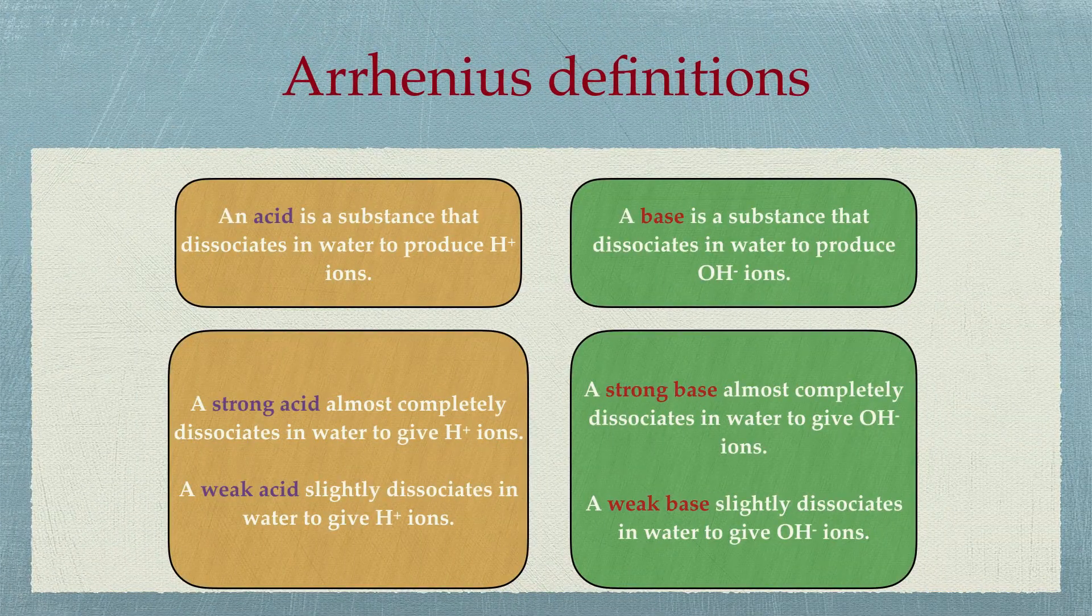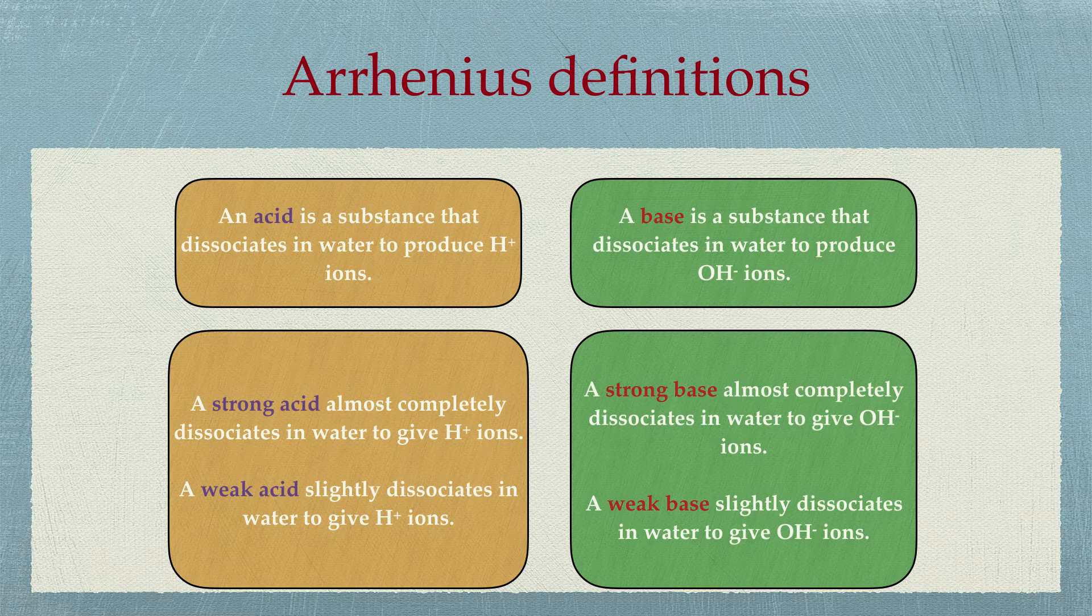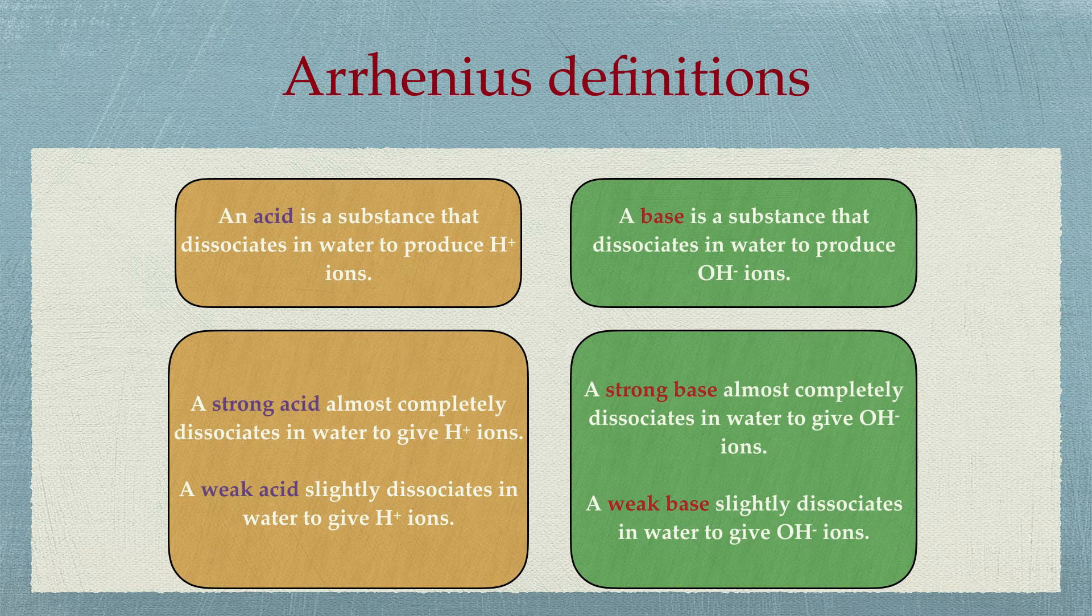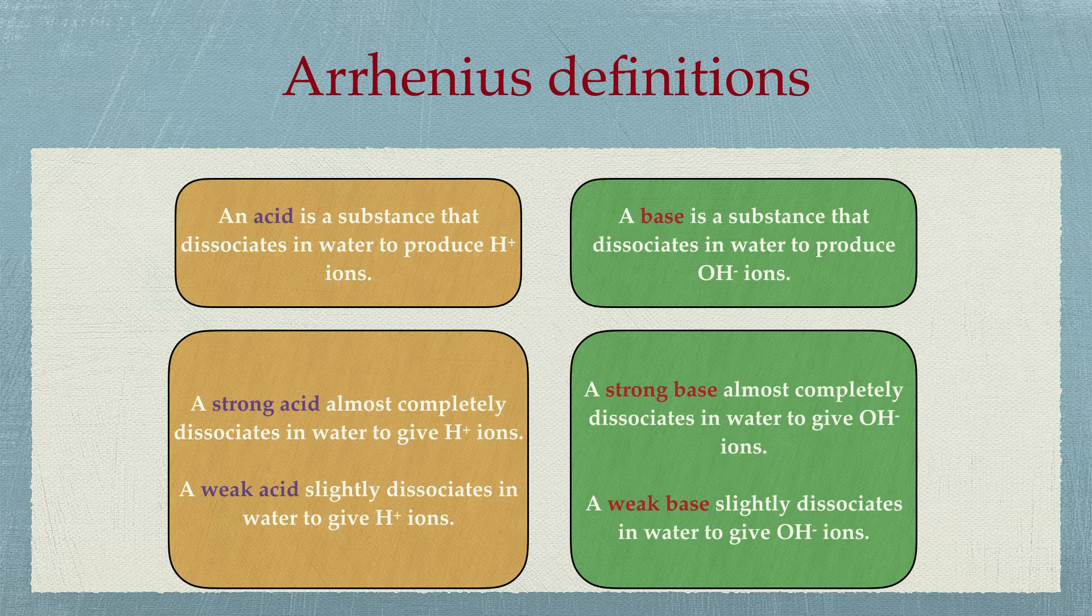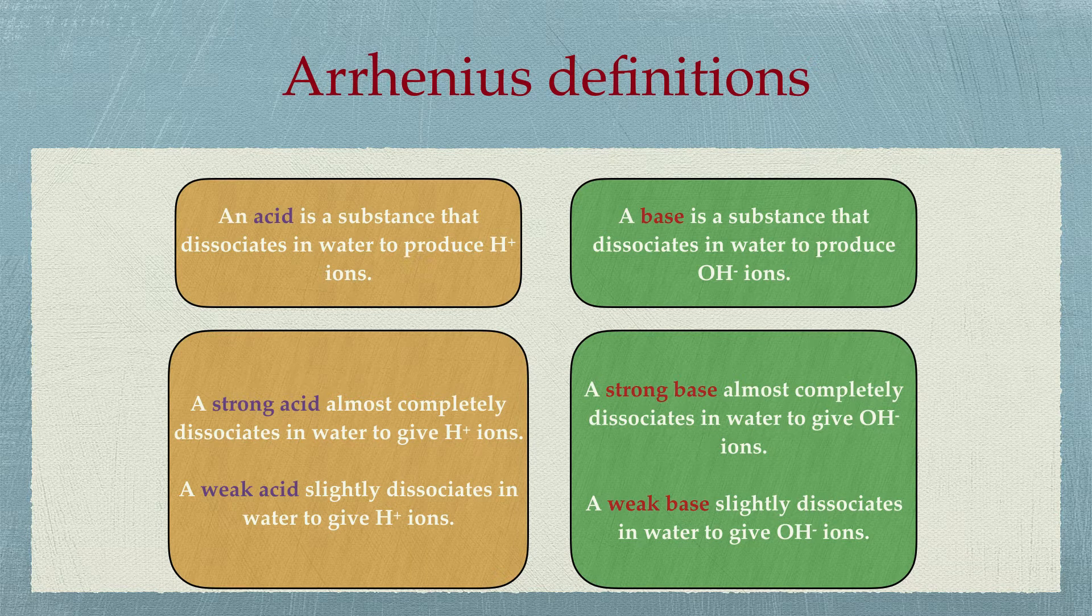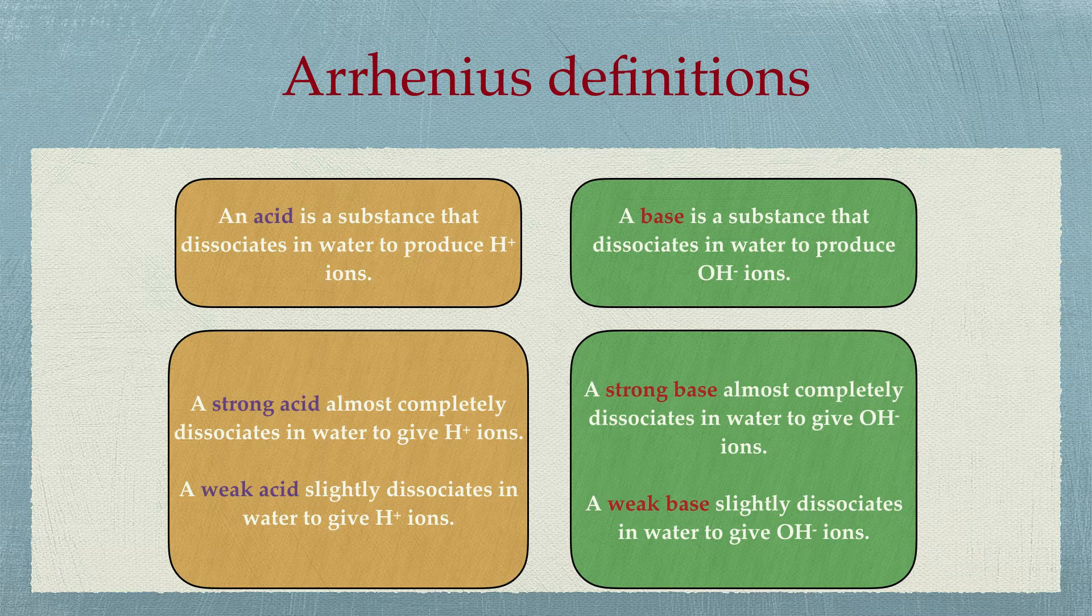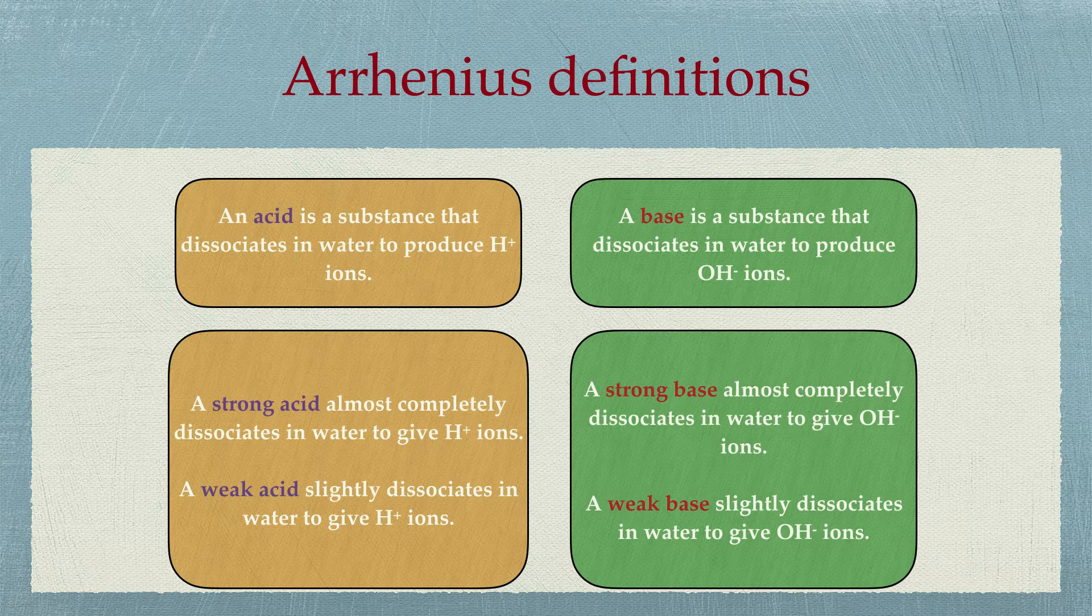There are several definitions in this chapter that you need to know. You need to be able to define Arrhenius acid bases. From this you need to be able to state what a strong or weak acid base is. Definitions are not difficult. H plus ions are also known as protons.